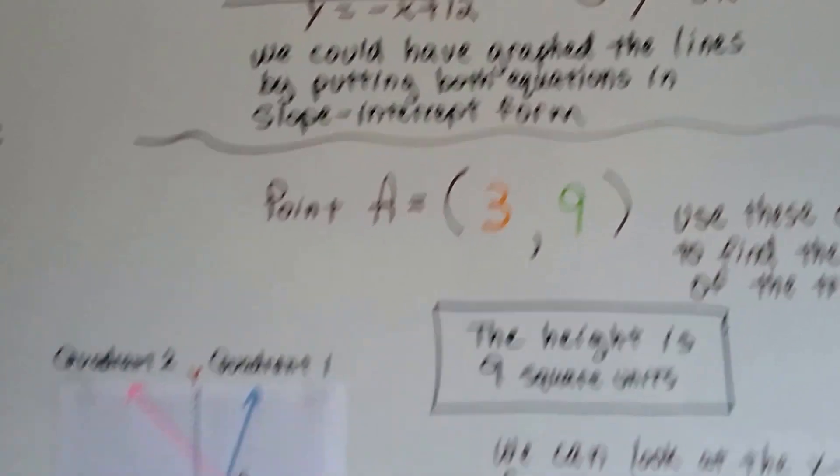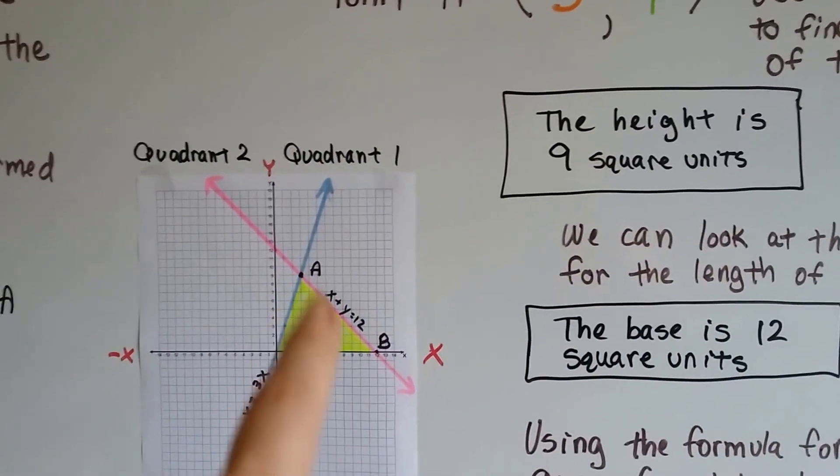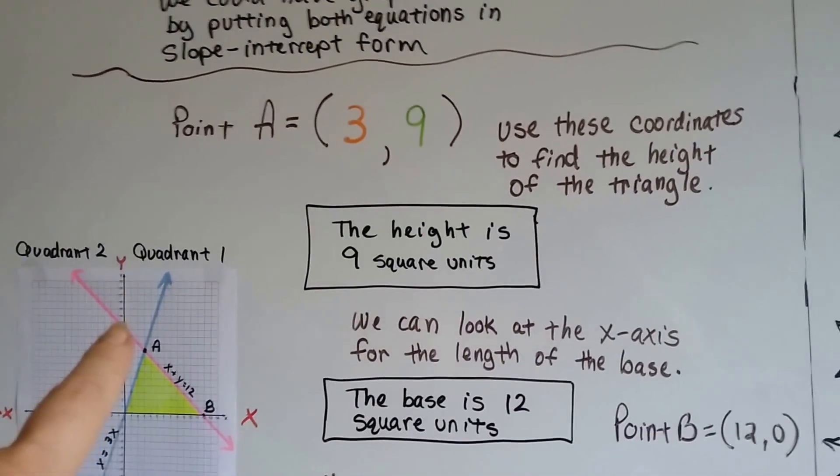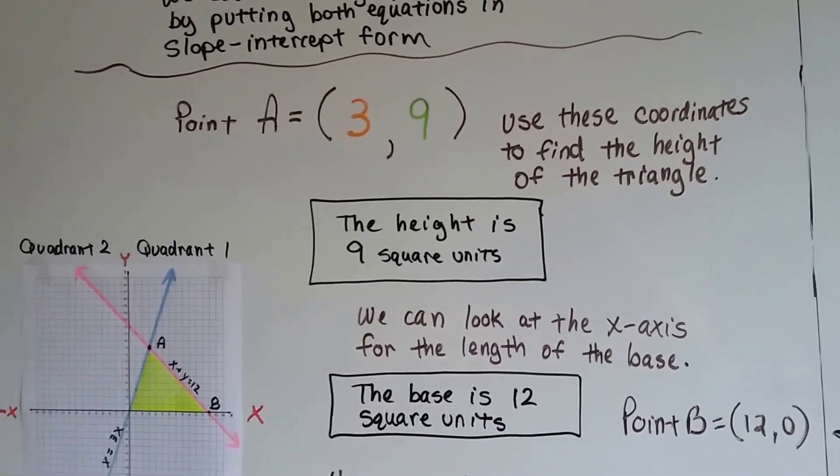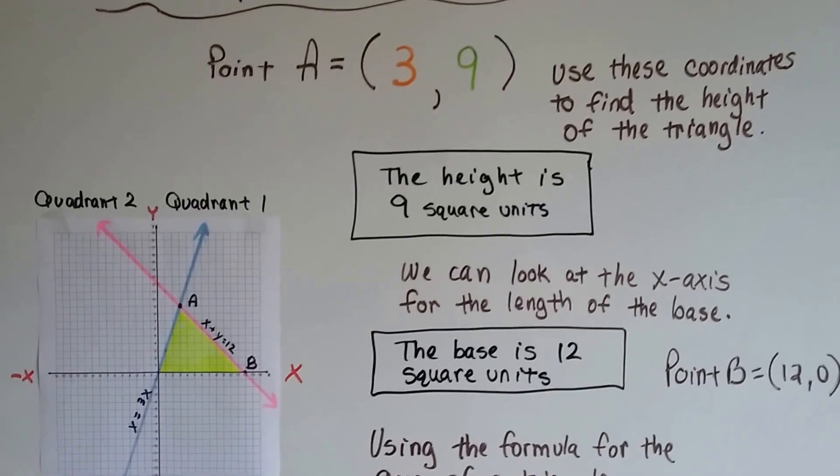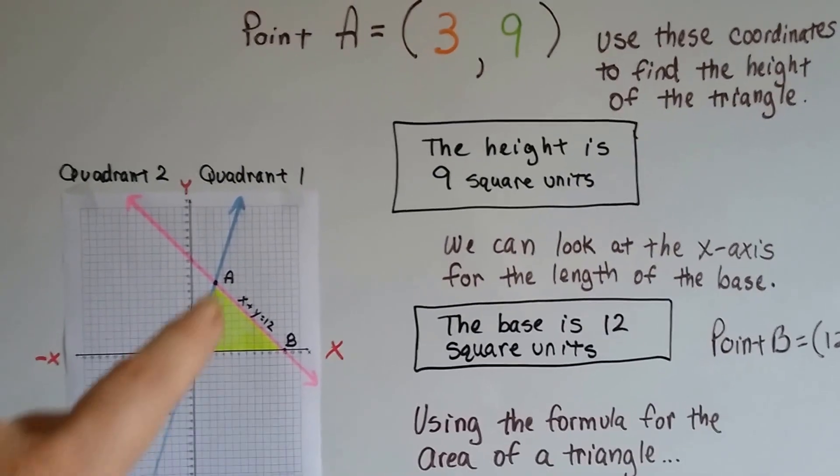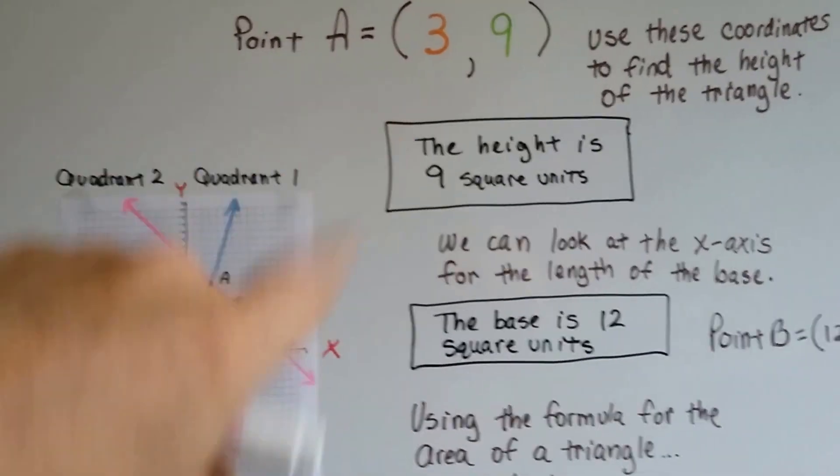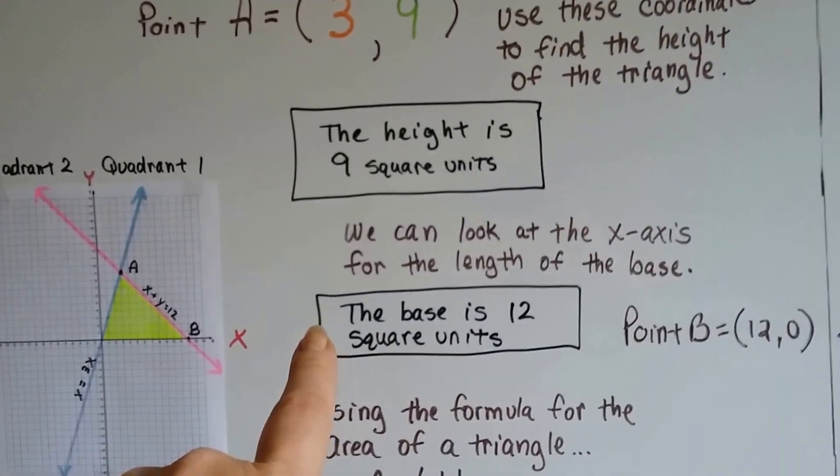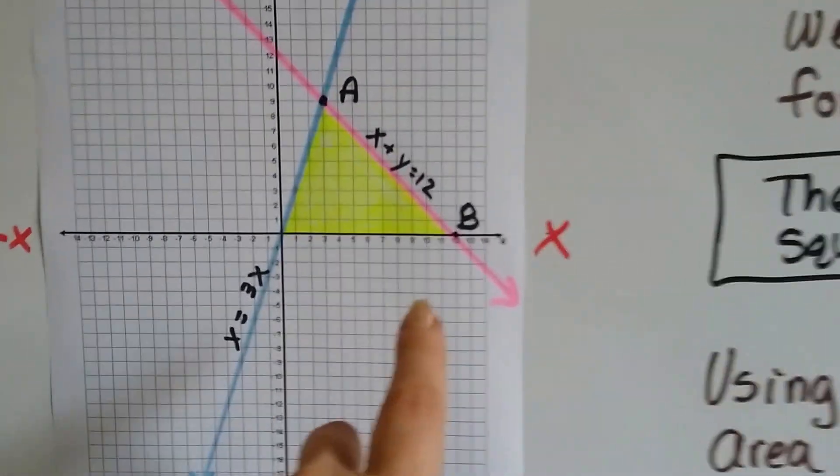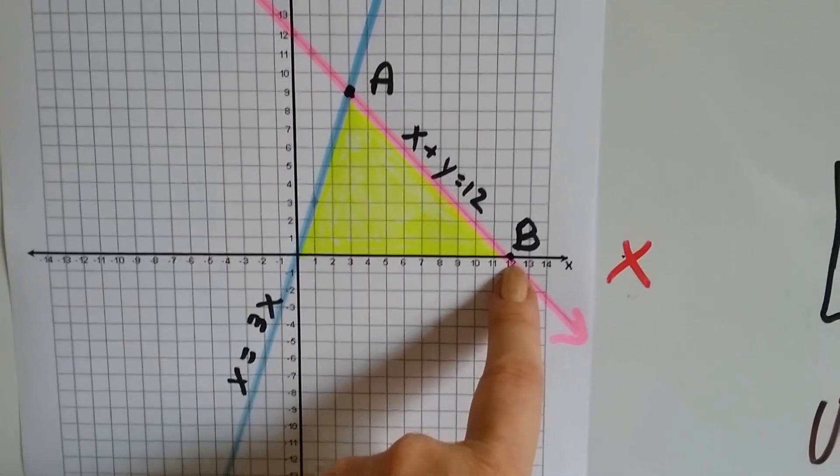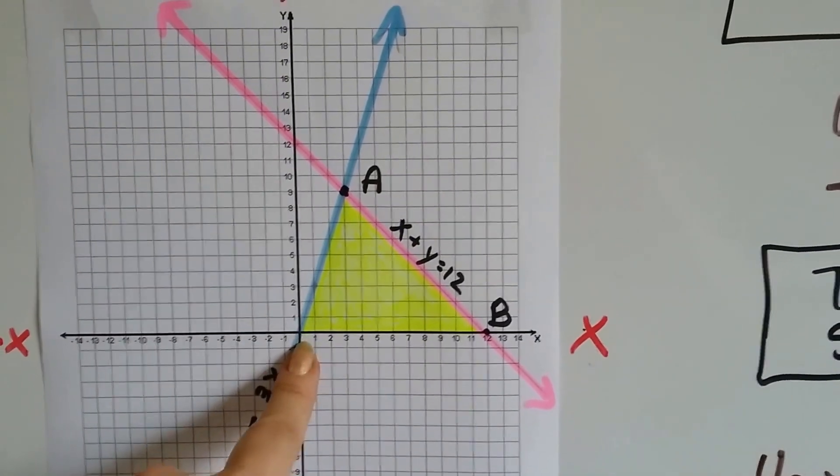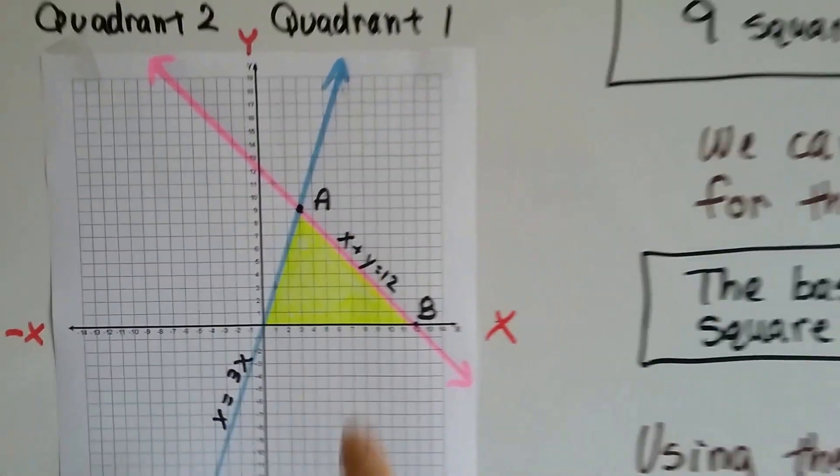So, they did give it to us and they did give us the drawing and here is our yellow triangle that we need to find the area for. So, point 3 comma 9 is right here. We use these coordinates to find the height of the triangle. Well, the height is 9 square units because it's on the 9 for the y. And we can look at the x-axis for the length of the base and we can see right here that it's on a 12. And see? It hits it on a 0. See that? That means it's proportional, doesn't it?